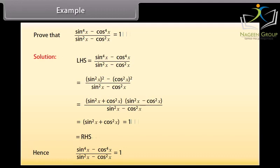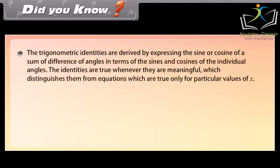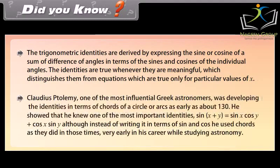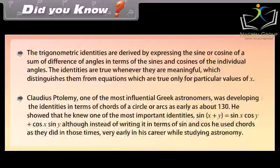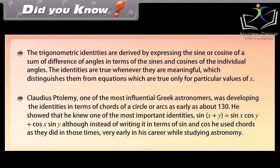Did you know? The trigonometric identities are derived by expressing the sine or cosine of a sum or difference of angles in terms of the sines and cosines of the individual angles. The identities are true whenever they are meaningful, which distinguishes them from equations that are true only for particular values of x. Claudius Ptolemy, one of the most influential Greek astronomers, was developing identities in terms of chords of a circle as early as about 130 AD. He showed that he knew the identity: sin(x + y) = sin x·cos y + cos x·sin y.